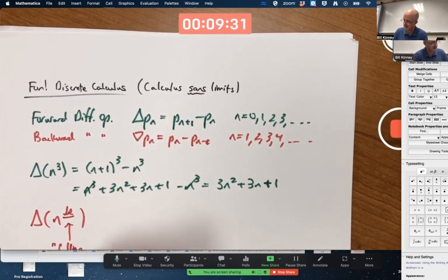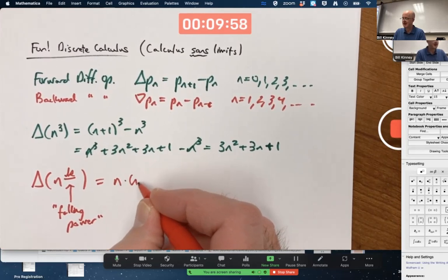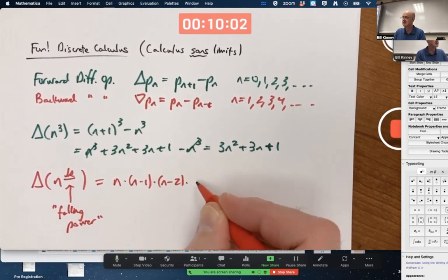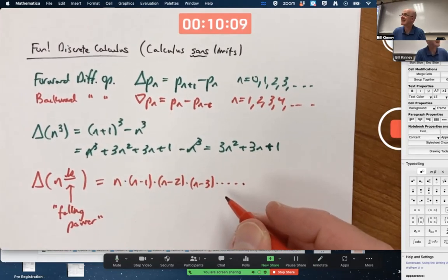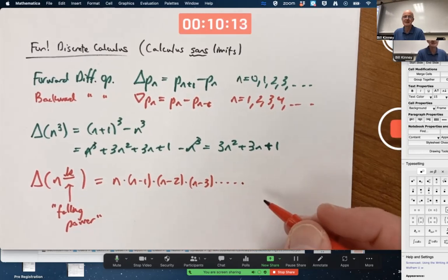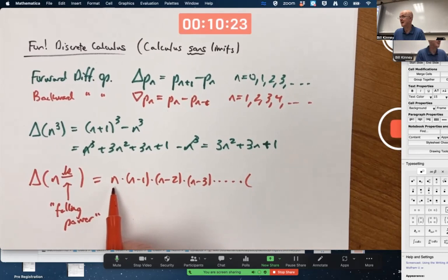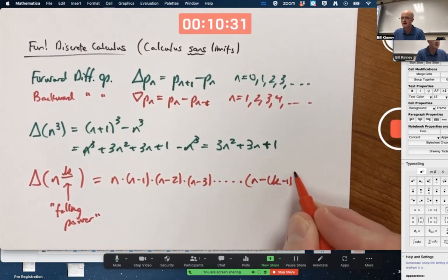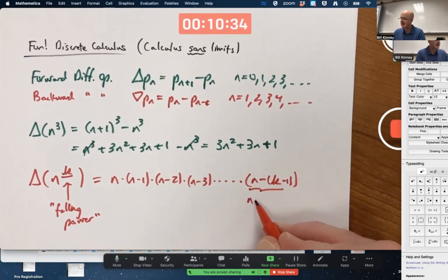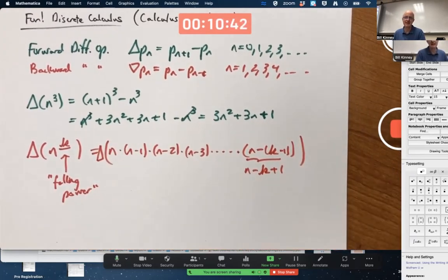But what in the world is a falling power? It's not N times itself K times, it's N times (N-1) times (N-2) times (N-3) et cetera. Hey, this kind of feels familiar, doesn't it? Kind of like factorials and binomial coefficients. What's the last factor in this product? You want to have K factors, since the first factor is N minus 0, and the second factor is N minus 1, third factor is N minus 2. The K factor must be N minus K minus 1, which could be expanded to N minus K plus 1.